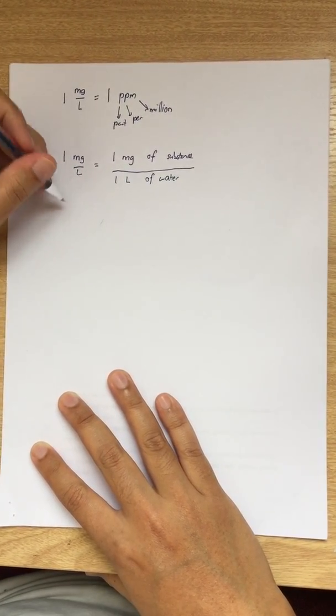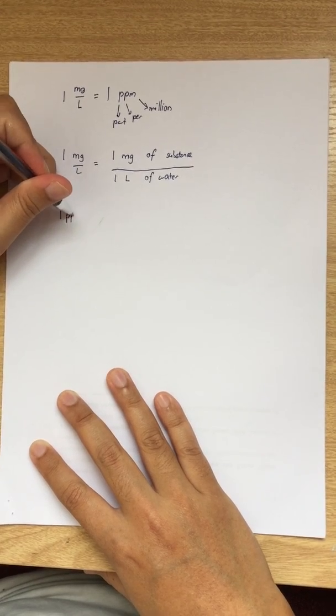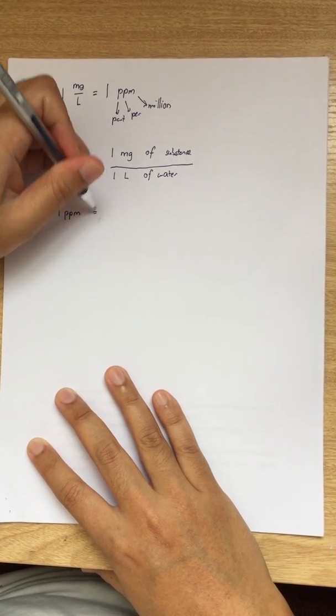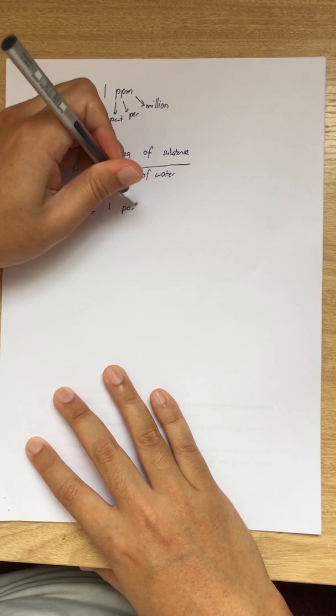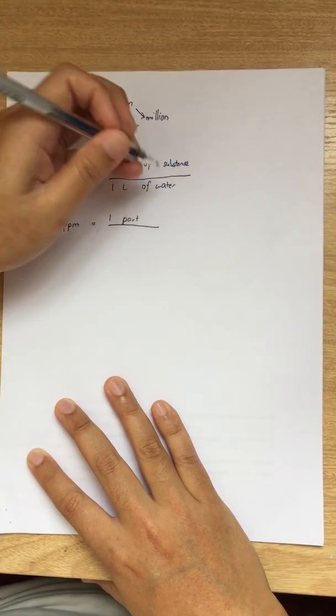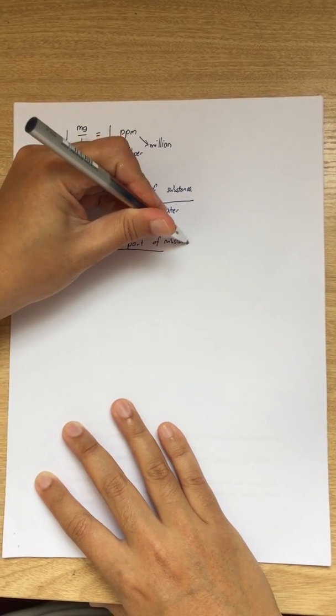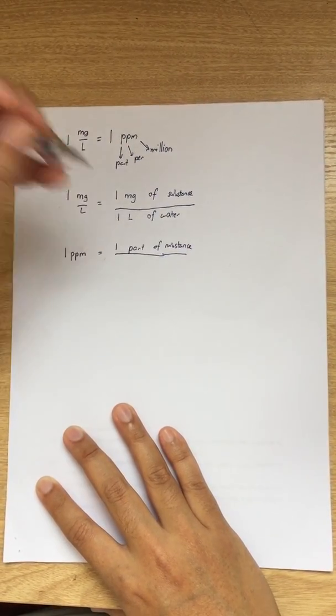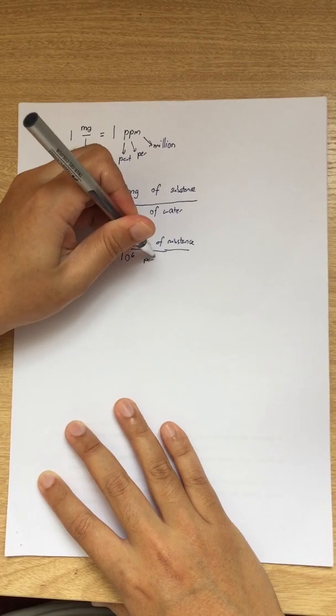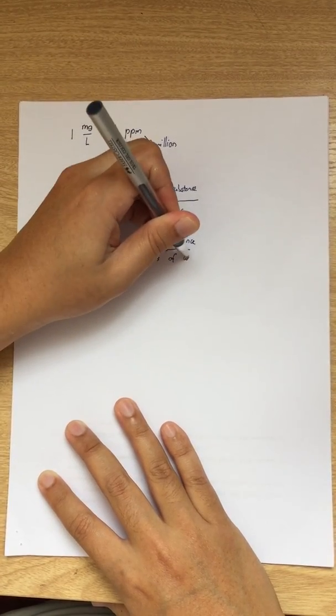So what do we mean also by one PPM? One PPM stands for one part of substance divided by million parts of water.